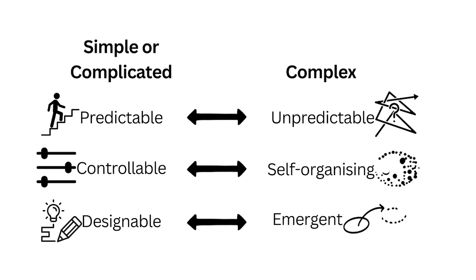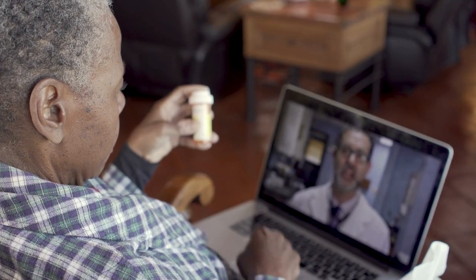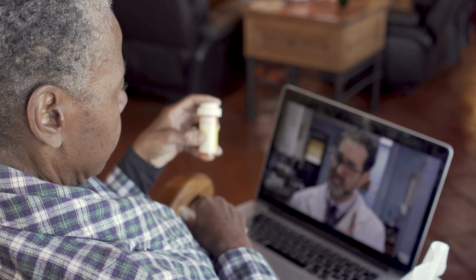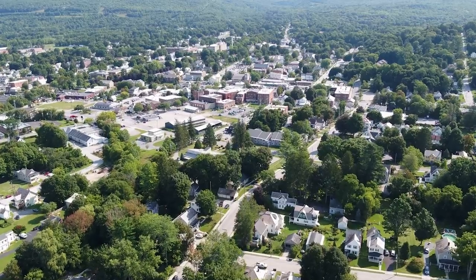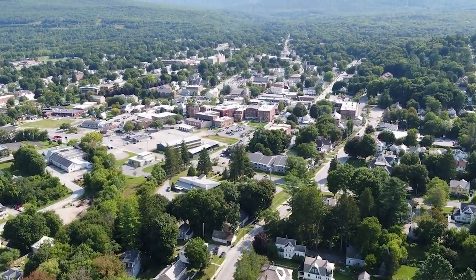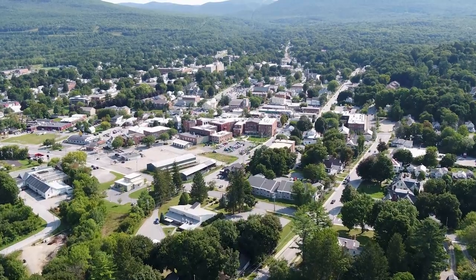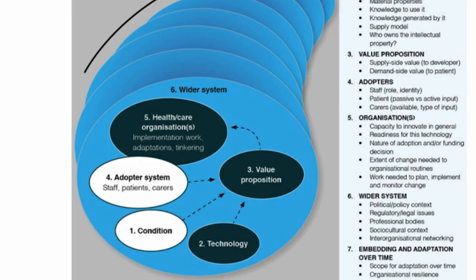Relationships between cause and effect are unclear or delayed. An example might be encouraging widespread adoption of telemedicine across diverse communities. There are likely to be technological barriers, but also patient and provider barriers like cultural attitudes and political aspects all thrown into the mix. Factors such as trust in digital healthcare, internet access disparities and provider training will all interact unpredictably. A solution that works well in one community may fail in another due to differences in local dynamics. So implementing telemedicine, because it's complex, would require ongoing adaptation, collaboration and learning.